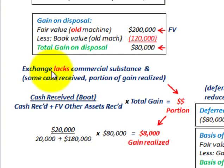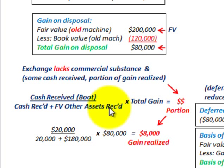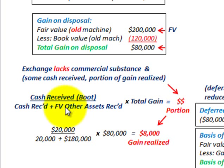Because this exchange lacks commercial substance and some cash is received, a portion of the gain has to be realized. Going back to our equation, our fractional amount is cash received — the boot — divided by the sum total of the cash received plus the fair value of the other assets received, times our total gain. That equals the portion of the gain that has to be recognized. We have a total gain of $80,000, and we received some cash, so we have to determine the portion of the gain that has to be recognized.